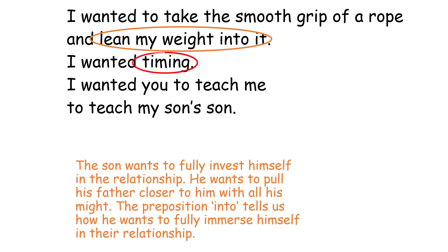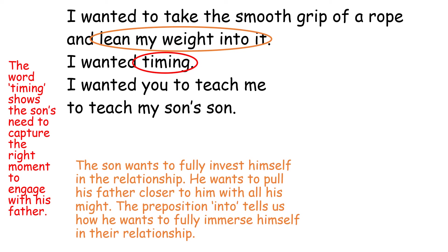The next line is a short, clear end-stopped line: 'I wanted timing.' Firstly, timing is very important to bell ringing — you need to make sure the timing is absolutely perfect so that the bells can make their noises in particular chimes and patterns. However, the word 'timing' could also show the son's need to capture the right moment to engage with his father. Perhaps the son feels that had he just been able to find the right moment, the exact right moment with his father in the exact right mood, then things would have been different. And tragically, he could never find that perfect time to connect, and they continued to drift further and further apart.